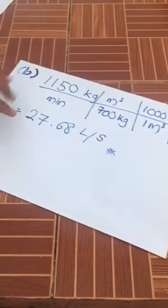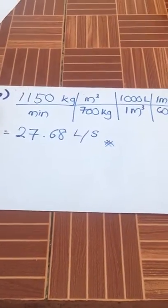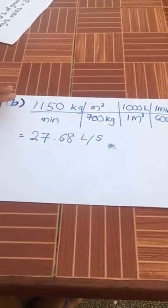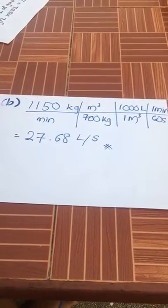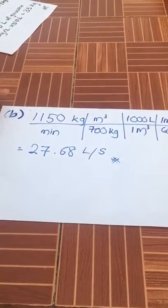Second question: The mass flow rate exiting refinery tank is 1150 kg per minute. Estimate the volumetric flow rate in liters per second.